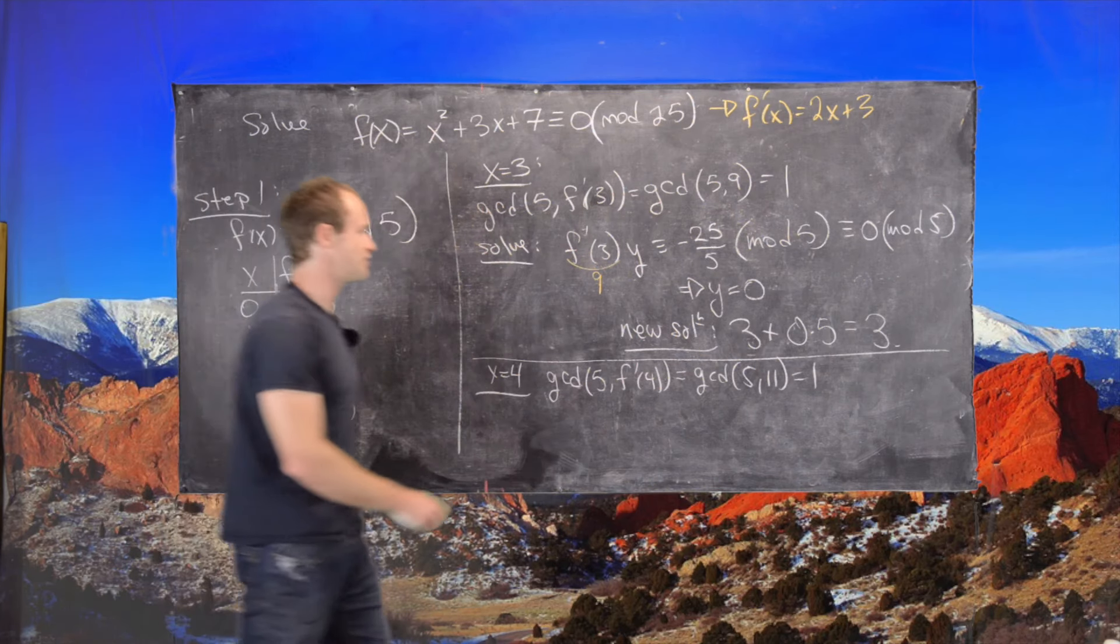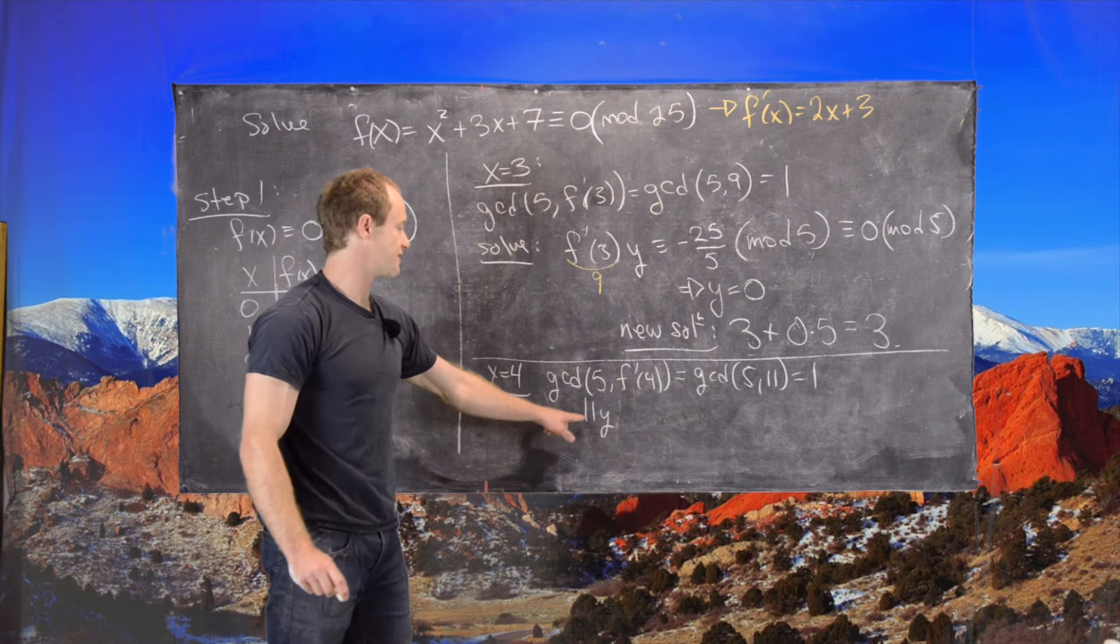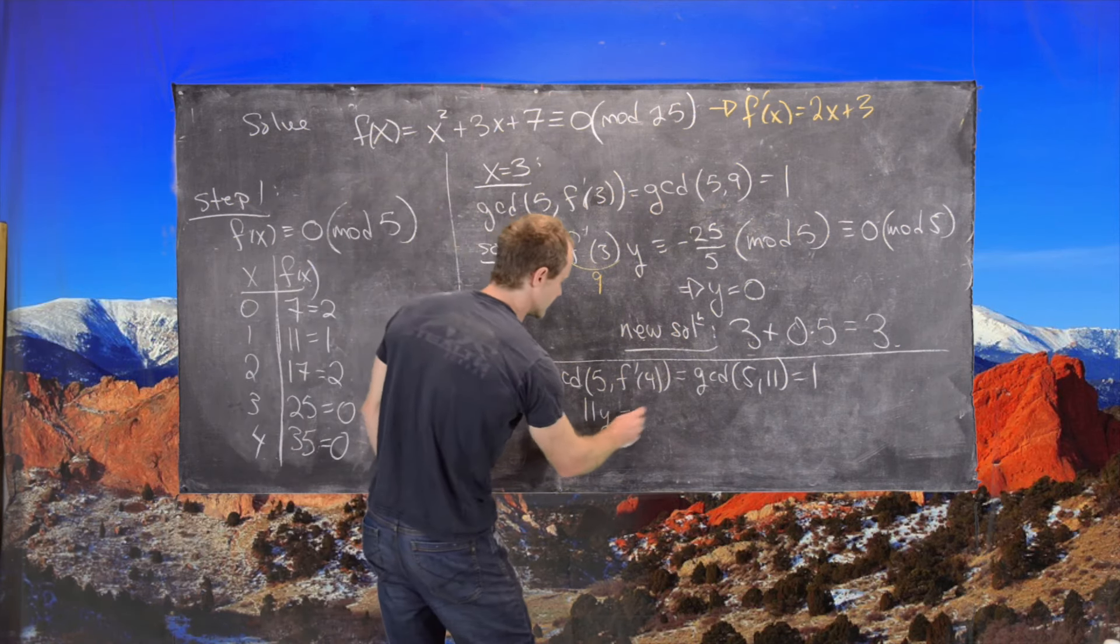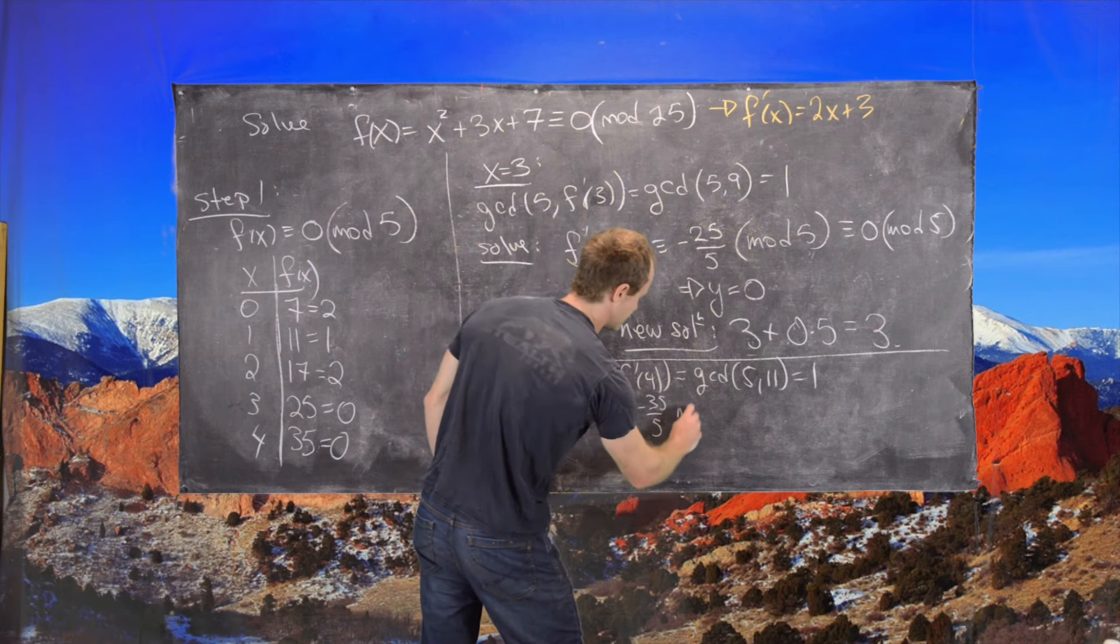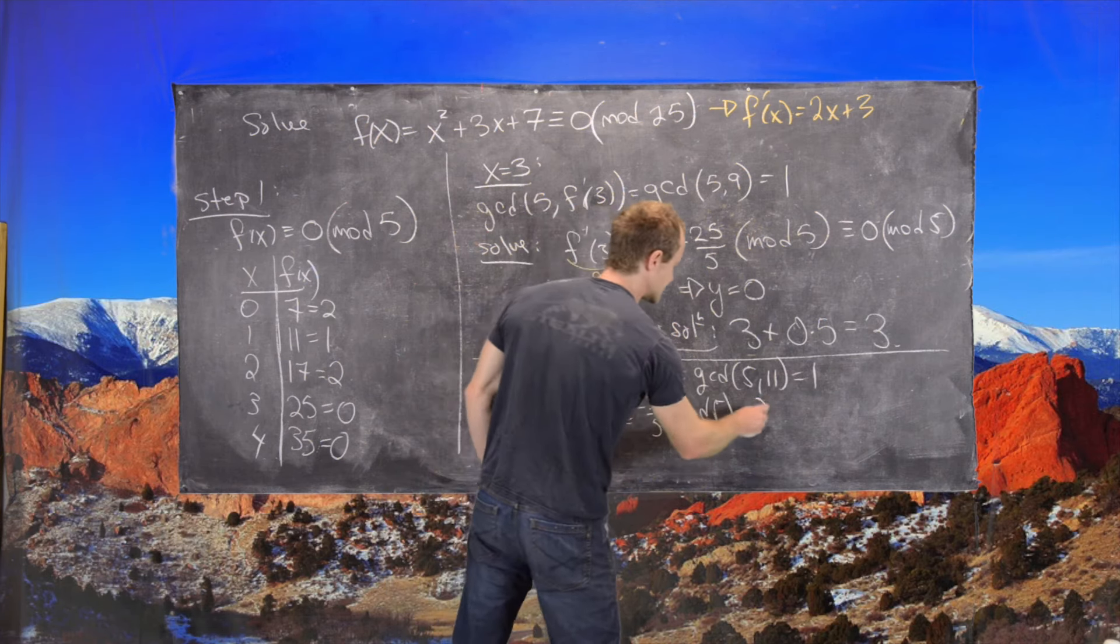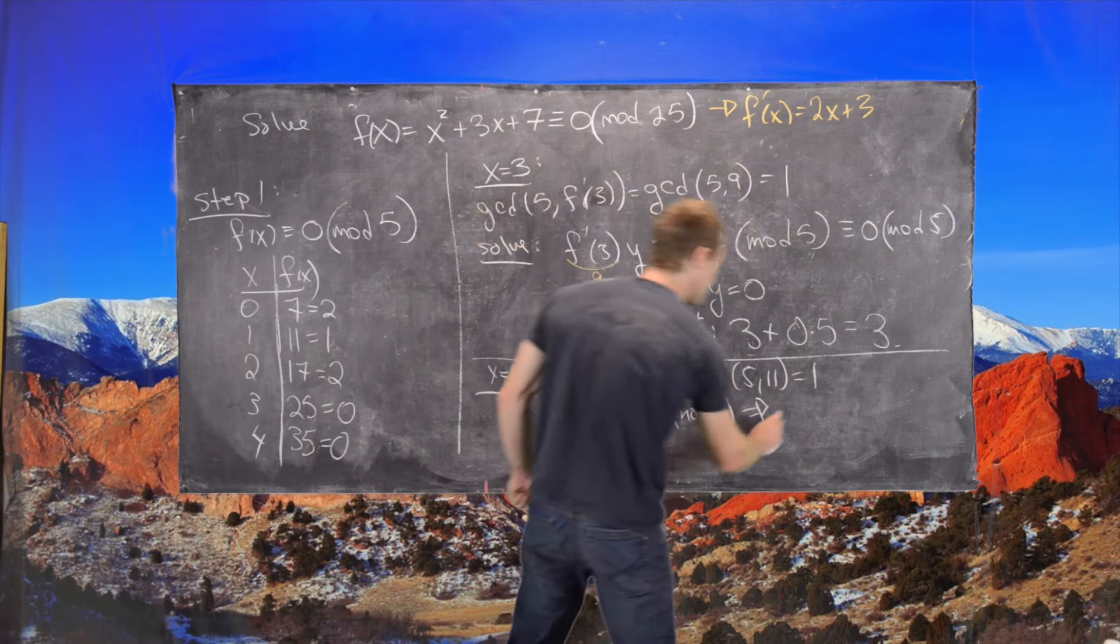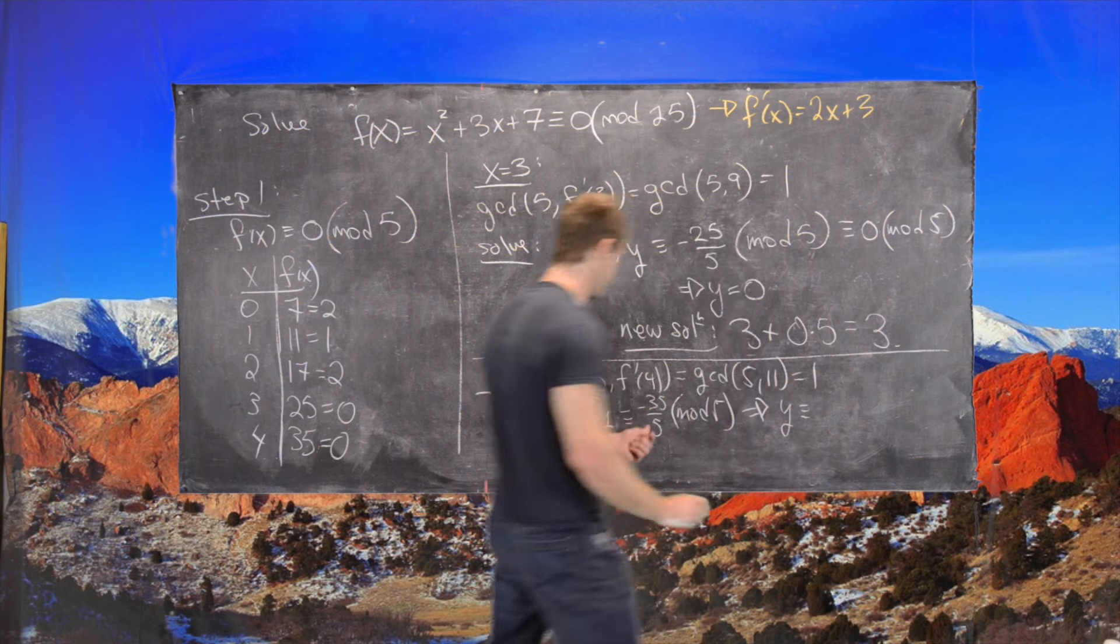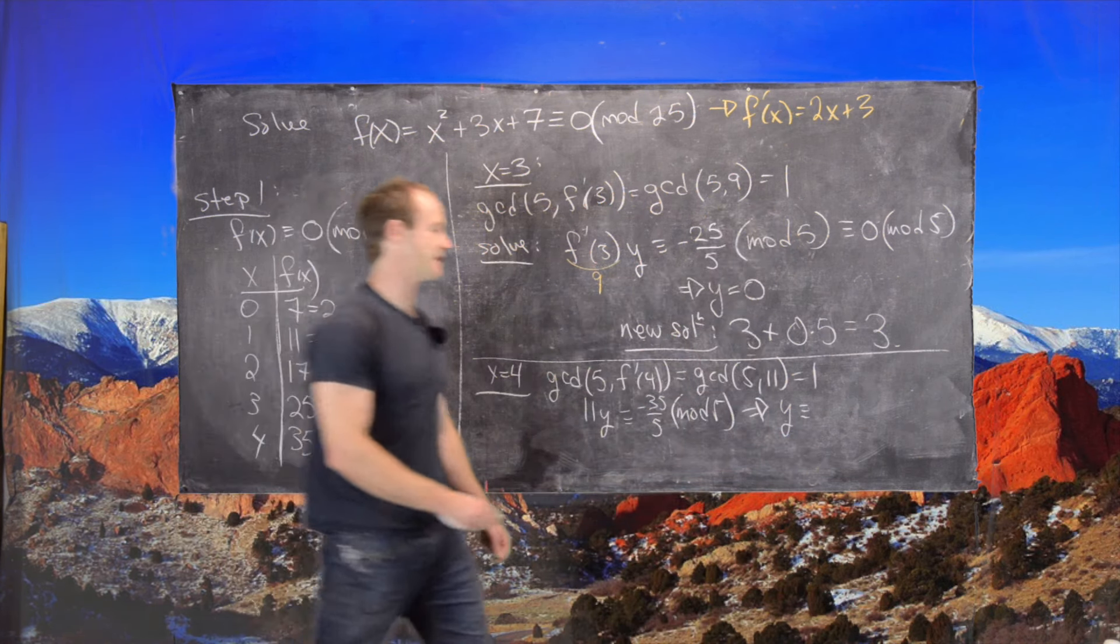And then using the same strategy, we need to calculate a solution to 11, which is f prime of 4, times y is congruent to negative 35 over 5 mod 5. And so that's the same thing as solving the congruence y is congruent to negative 7, but negative 7 is the same thing as 3 mod 5.